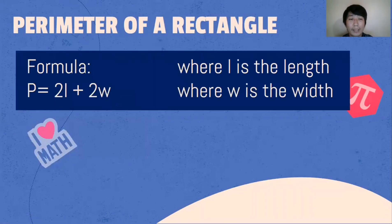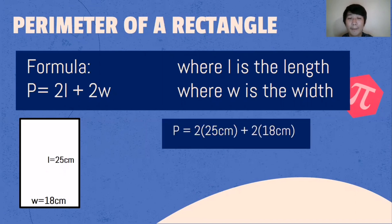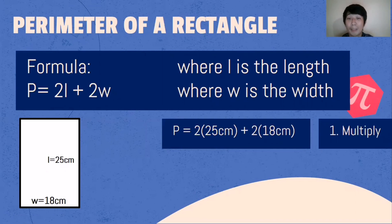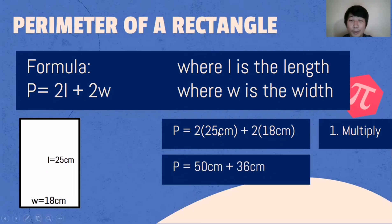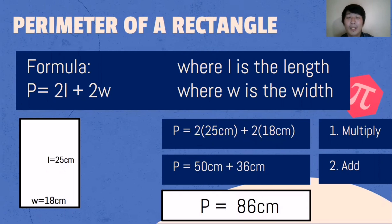Let's have another example. Given the length is 25 centimeters and the width is 18 centimeters, find the perimeter. Perimeter = 2 × 25 cm + 2 × 18 cm. First multiply: 2 × 25 cm = 50 cm, and 2 × 18 cm = 36 cm. Then add: 50 + 36 = 86 centimeters. The perimeter of the given rectangle is 86 centimeters.